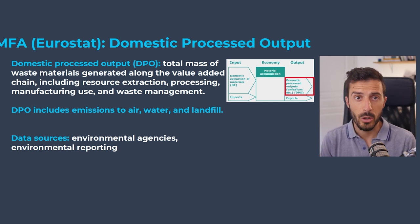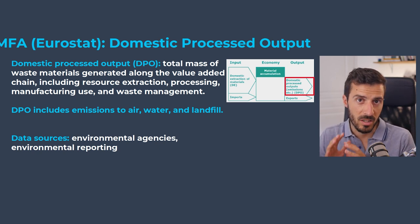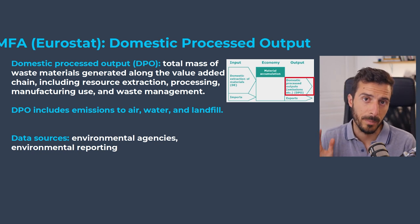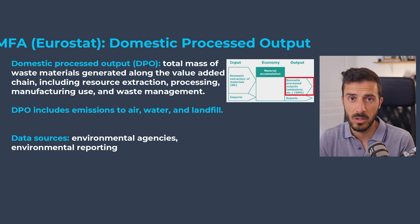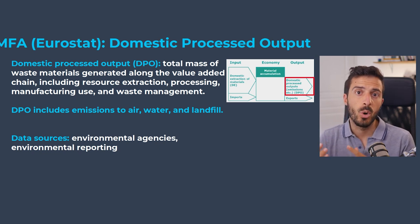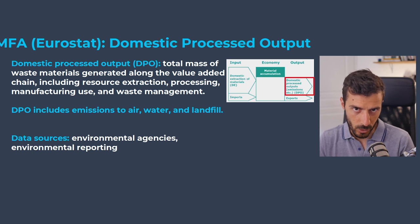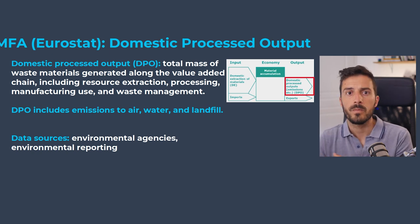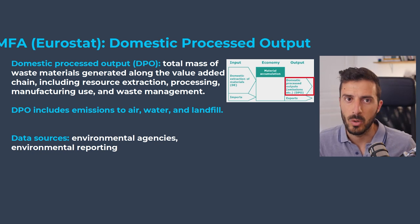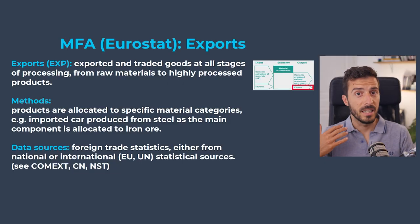Next is the domestic processed output — all the mass of waste materials generated within an economy during resource extraction, processing, manufacturing, and waste management. This includes pollution to air — CO2, methane, and other emissions — water emissions such as nitrogen and phosphorus, and solid waste going to landfill. Data for this can be found in environmental agencies and environmental reporting sources.